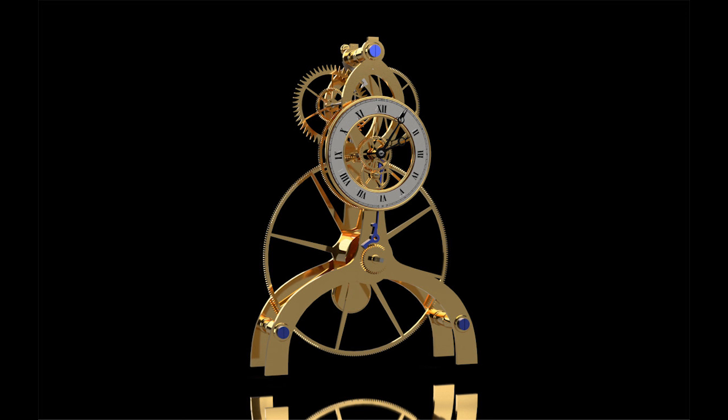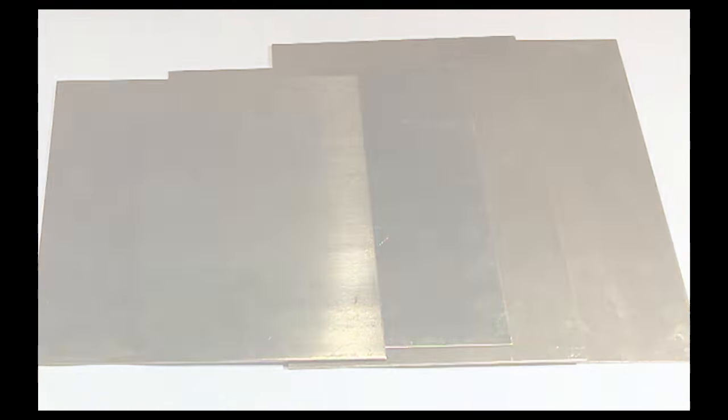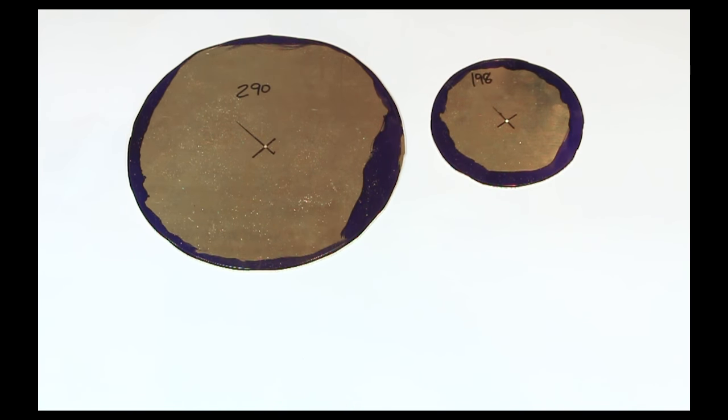Before we get started, I just want to point out that the image you're looking at is not my finished clock. It's a digital rendering from my CAD program. John Wilding's book specifies diameters and thicknesses for each of the gears. So I began by cutting out rough circles just using my bandsaw.